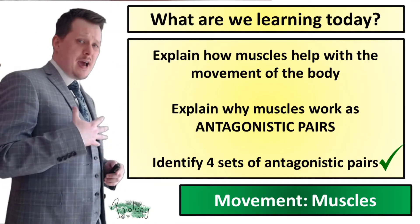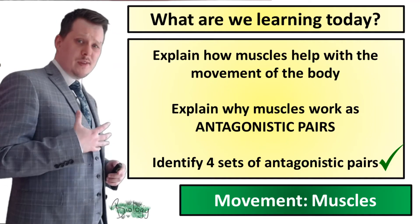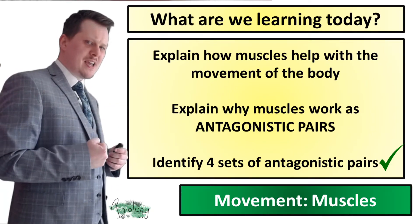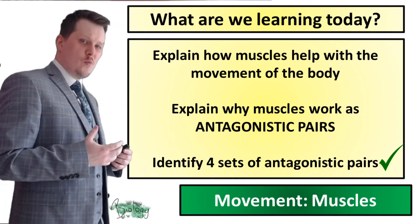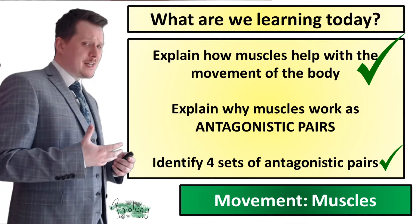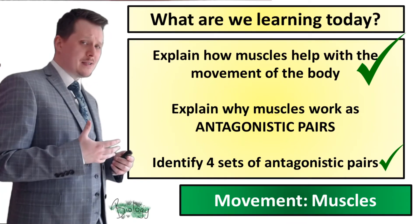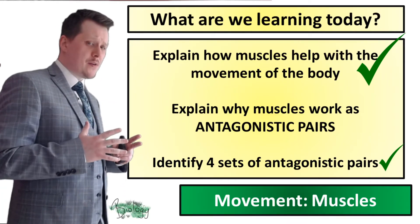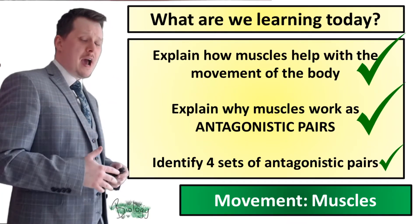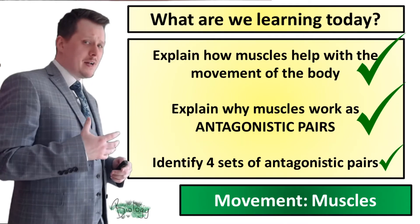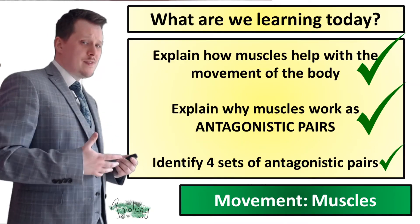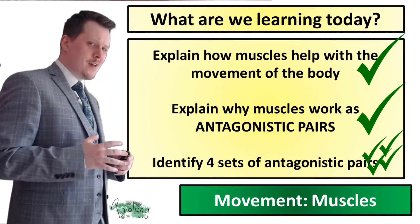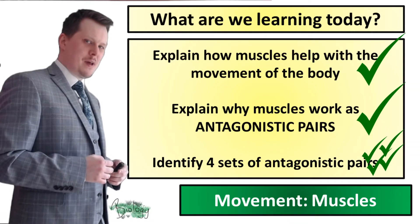We can now explain how muscles help with movement of the body by pulling the skeleton, and why they need to work as antagonistic pairs because they can only pull — they cannot push. Including our biceps and triceps from the beginning, we've now identified four sets of antagonistic pairs.